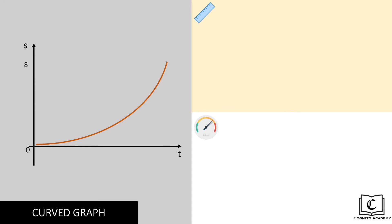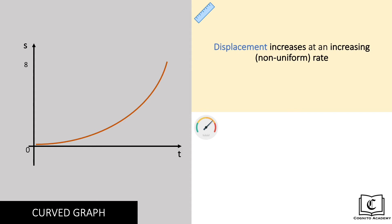Now that we are done with the straight line displacement time graphs, let's move on to curves, where gradient and hence velocity isn't constant anymore. We can see from this graph that displacement is increasing from 0 to 8 meters, but at a non-constant increasing rate. Looking at its gradient, the gradient is pointing upwards and becoming steeper. Hence gradient is positive and increasing, and so is velocity.